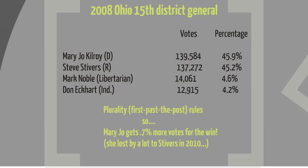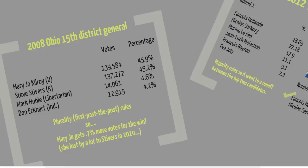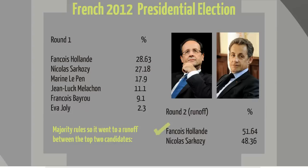Under majority rules, somebody has to get a majority — which means 50% plus 1. Here are the results from the 2012 presidential election in France. In the first round, all qualified candidates ran, and as you can see, nobody got too close to a majority. Thus, a second round was necessary. In the second round, the top two vote-getters compete: the incumbent president and center-right candidate Nicolas Sarkozy, pictured here on the right, and the challenging candidate from the left, François Hollande, pictured here on the left. In this election between two candidates, we did see a majority for François Hollande with 51.64% of the vote, and that is why he is the current French president.